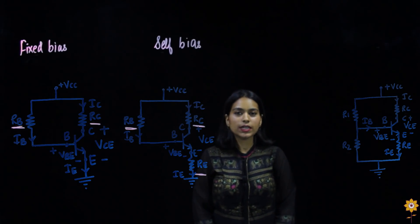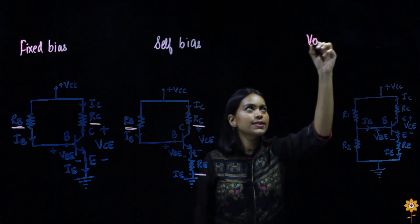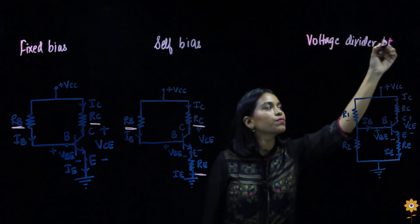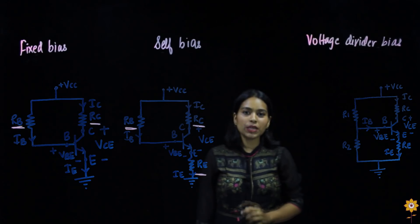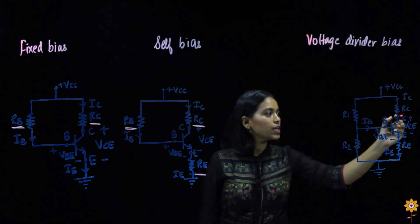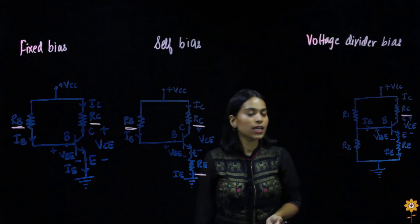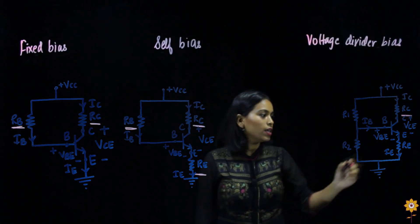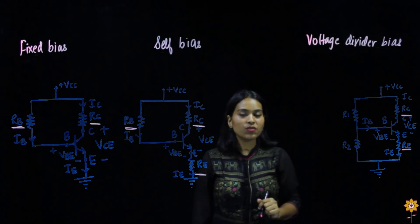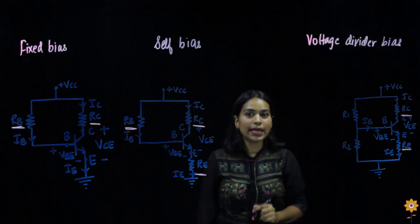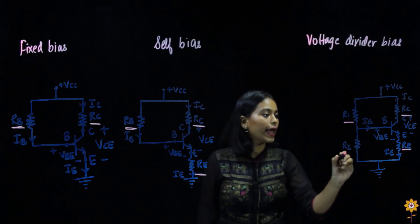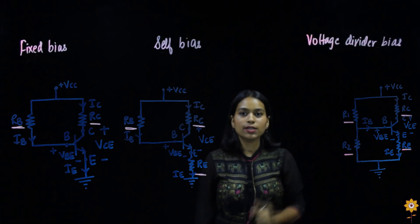This is the circuit diagram for voltage divider bias. Comparing all three diagrams, resistor RC is common in all configurations and is present in the collector terminal. There is also a resistor RE in the emitter terminal, but there is no resistor RB in the base terminal. Instead, we have two resistors R1 and R2 in parallel connected to the base.